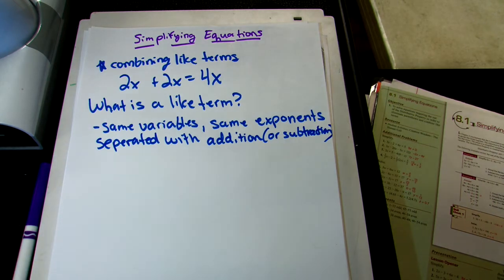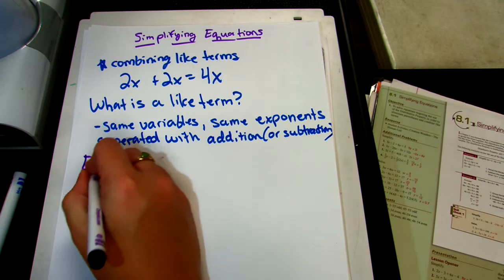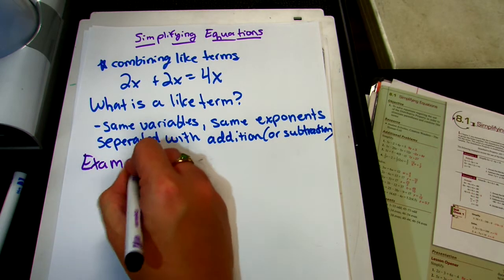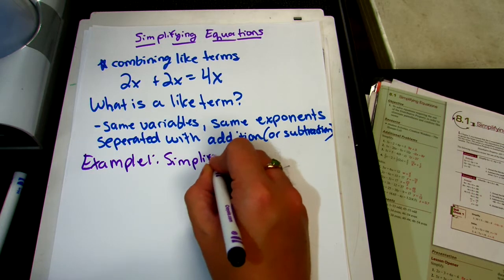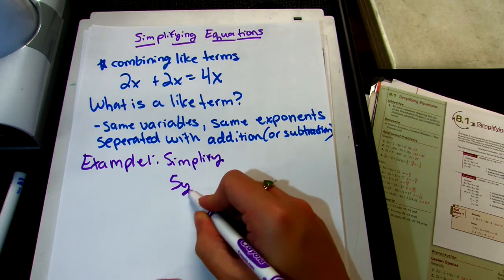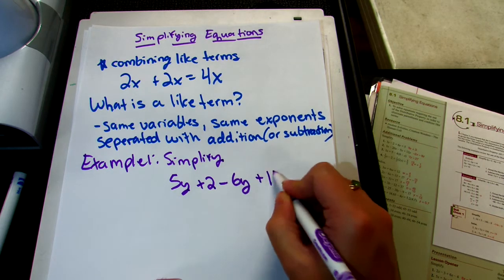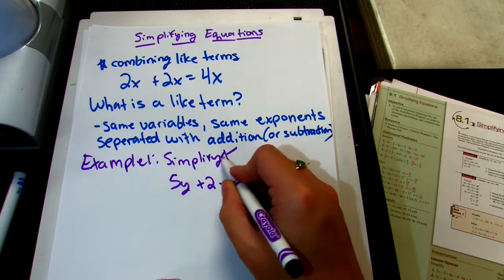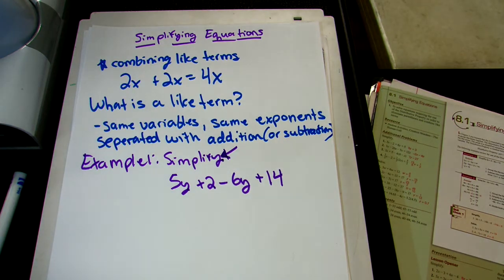Let's get some examples. In example one, we have the question: simplify 5y plus 2 minus 6y plus 14. Notice the word simplify — it doesn't say solve, it just says to simplify. So all we have to do is combine like terms until we can't combine anymore.